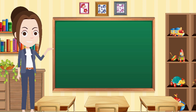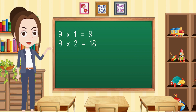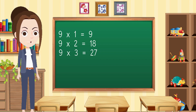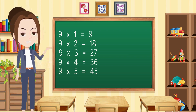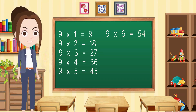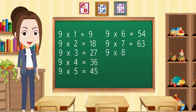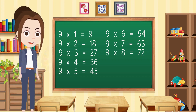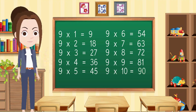Table of 9. 9 1s are 9, 9 2s are 18, 9 3s are 27, 9 4s are 36, 9 5s are 45, 9 6s are 54, 9 7s are 63, 9 8s are 72, 9 9s are 81, 9 10s are 90.